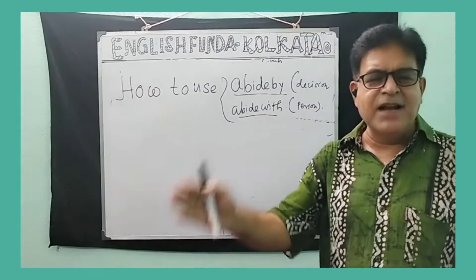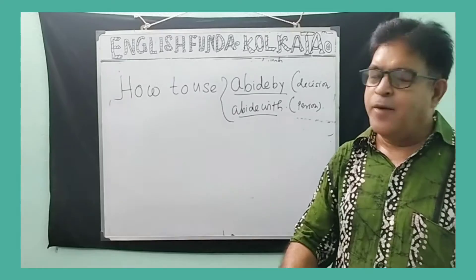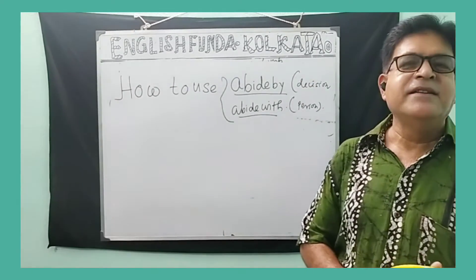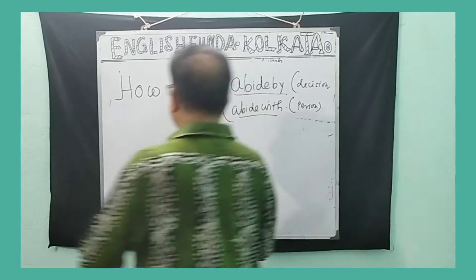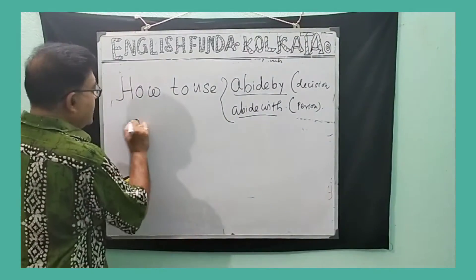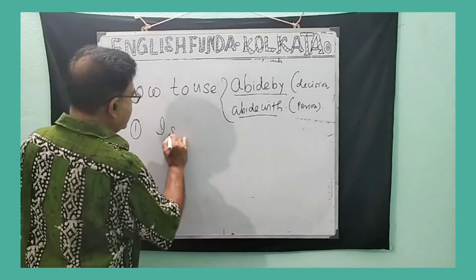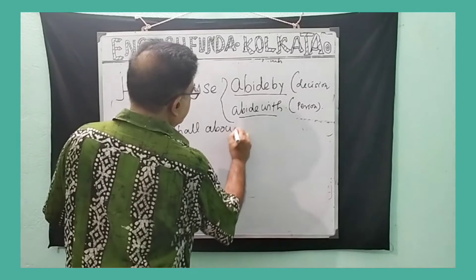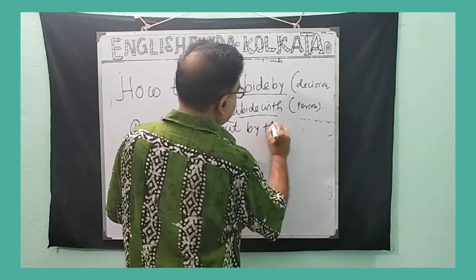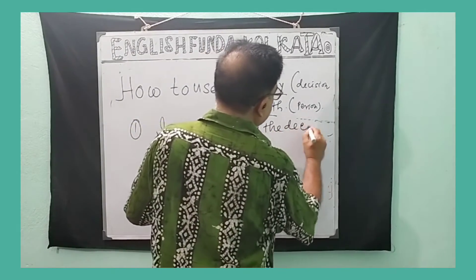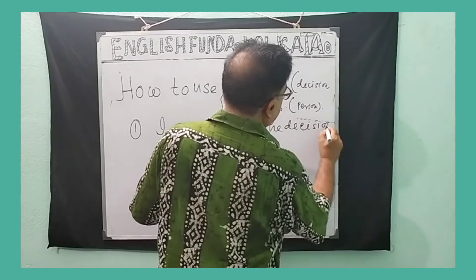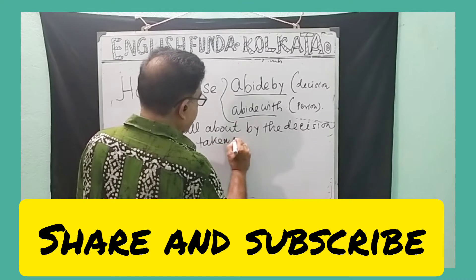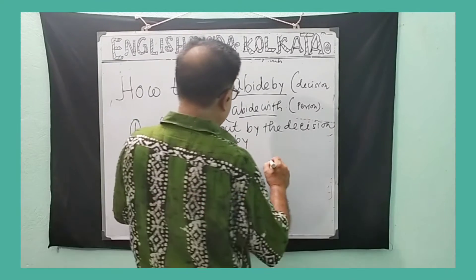But there is a slight difference in the use of 'abide by' and 'abide with'. Come to the example. 'I shall abide by the decision taken by the authority.' Here 'abide by' is used with a rule or decision.